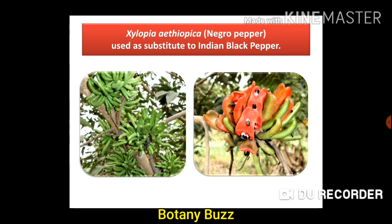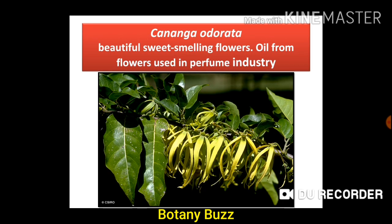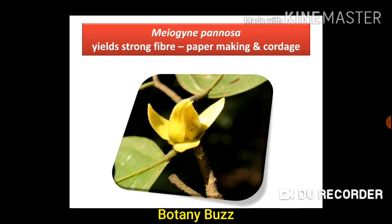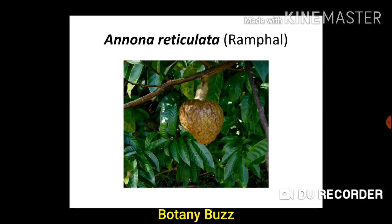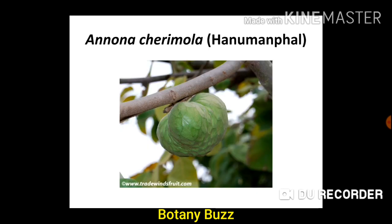Xylopia ethiopica, commonly called Negro pepper, is used as a substitute for Indian black pepper. Xylopia parviflora wood is used for making plywood. Kananga odorata has beautiful sweet-smelling flowers and oil from the flowers is used in the perfume industry. Meiogyne panosa yields a strong fiber used in paper making and cordage making.